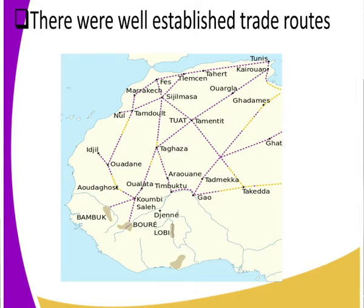The route went along to Tamatit, to Gat, or to Gao. There is another trade route from Irjil, to Gadane, Oulalata, Kombiu, Saleh, Jen, and Lobby. Those are well-defined trade routes, and that is a factor that facilitated the development of trans-Saharan trade. So, the first factor is that there were well-established trade routes.